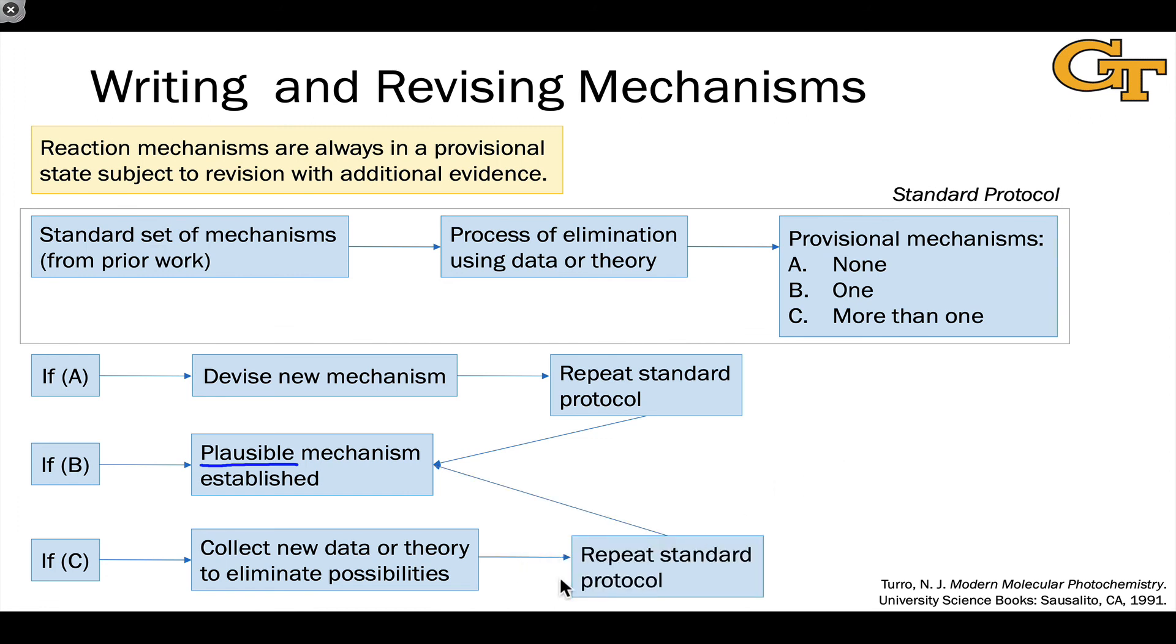And here again, we're going to repeat that standard protocol basically until we get to case B where we have established one plausible mechanism or a small set of very closely related plausible mechanisms. And that's it. This is sort of our general cycle for writing, investigating, and revising reaction mechanisms.